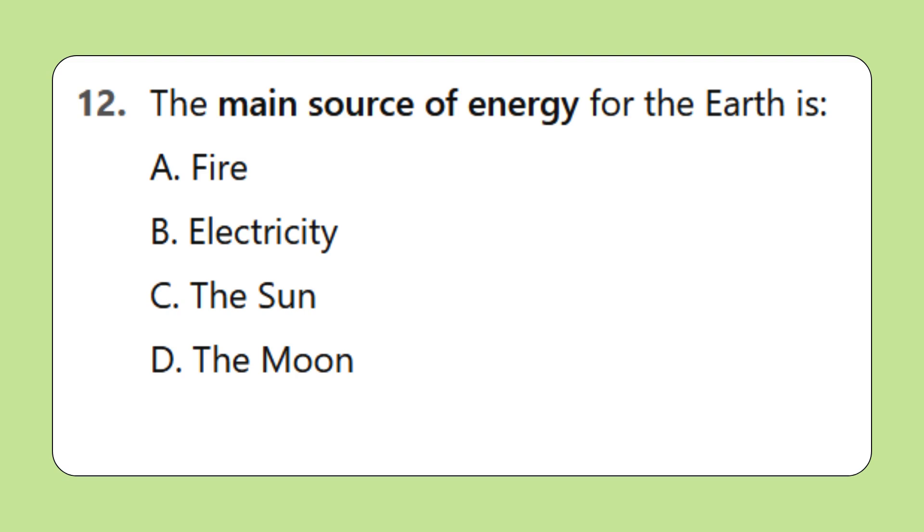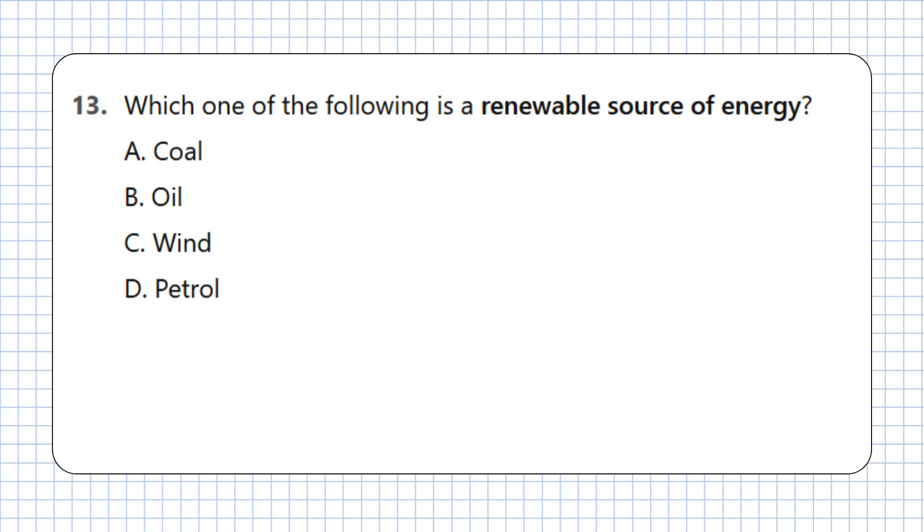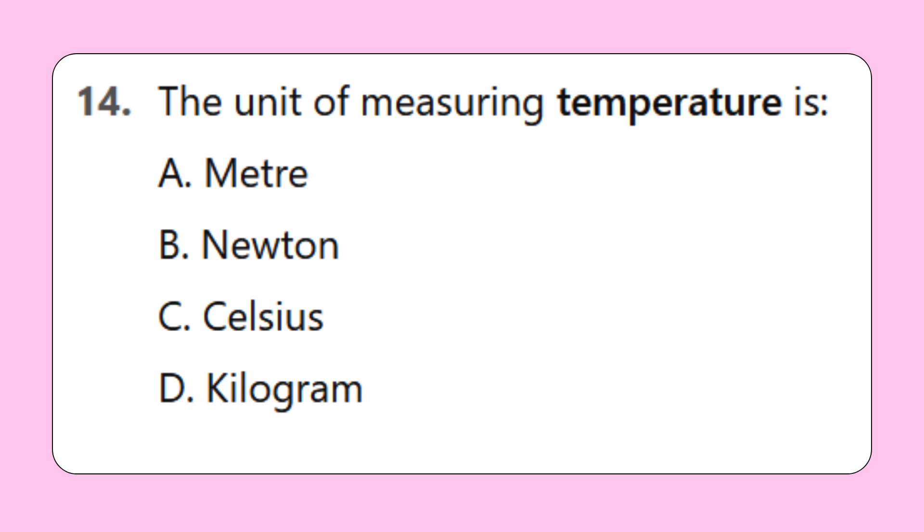Question 12: The main source of energy for the earth is: A. Wind, B. Water, C. The sun, D. The moon. Question 13: Which one of the following is a renewable source of energy? A. Coal, B. Oil, C. Wind, D. Petrol. Question 14: The unit of measuring temperature is: A. Meter, B. Newton, C. Celsius, D. Kilogram.